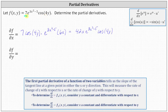Now to find the partial of f with respect to y, we consider x a constant and differentiate with respect to y. If we treat x as a constant, we are treating seven times e to the power of the quantity three x squared minus five as a constant, and differentiating cosine four y with respect to y.